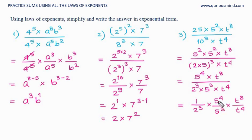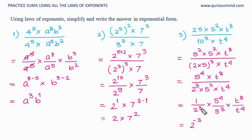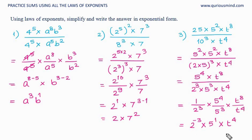We get 1 upon 2 raised to 3, multiplied by 5 raised to 4 upon 5 raised to 3, multiplied by t raised to 8 upon t raised to 4. Same base and division apply. Now 1 upon 2 raised to 3 is the same as 2 raised to minus 3, because a raised to minus 3 equals 1 upon a raised to 3. Then 5 raised to 4 divided by 5 raised to 3 gives 5 raised to 1, and t raised to 8 upon t raised to 4 gives t raised to 4, since 8 minus 4 is 4. So the final answer is 2 raised to minus 3 into 5 into t raised to 4.